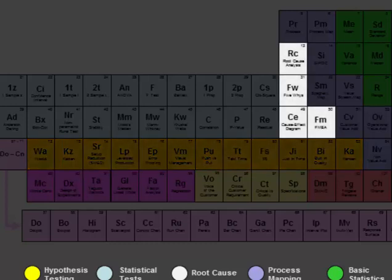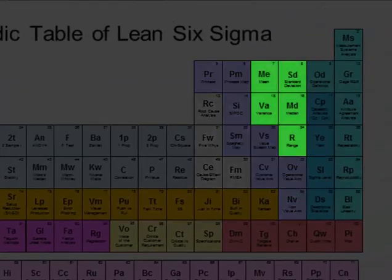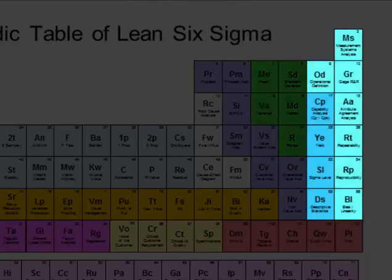This area covers some of the softer root cause analysis tools. The purple section covers process mapping, while the green area shows some very basic statistics. The dark blue and light blue sections cover baseline metrics and measurement system analysis topics, respectively.